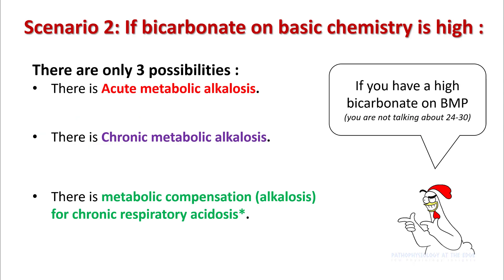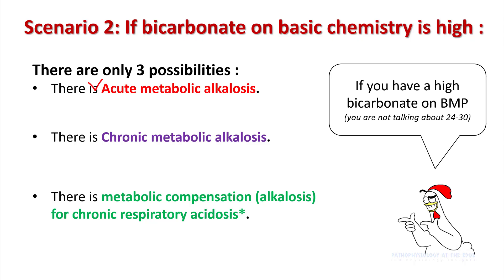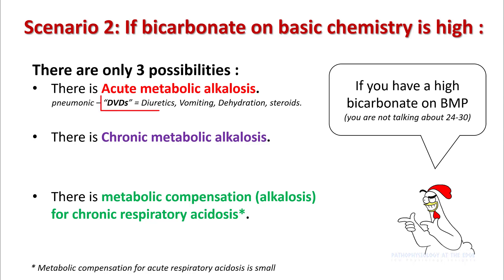Now let's take the other scenario where your bicarb on basic chemistry is high. In this case, you only have three possibilities: either you have acute metabolic alkalosis, chronic metabolic alkalosis, or metabolic compensation for chronic respiratory acidosis. Note that metabolic compensation for acute respiratory acidosis is small, so you can possibly neglect that. Go through your mnemonic DVDs for figuring out the cause for acute metabolic alkalosis: things like Diuretics, Vomiting, Dehydration, and Steroids.